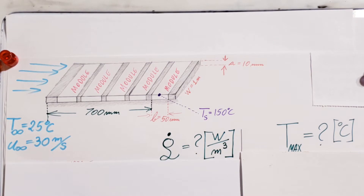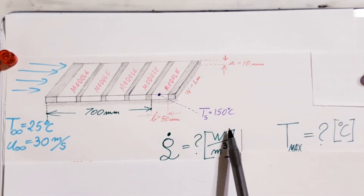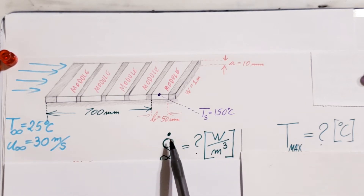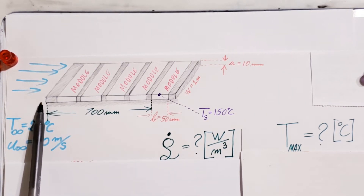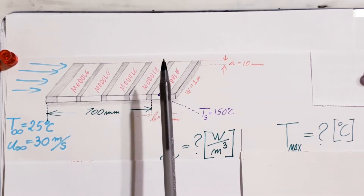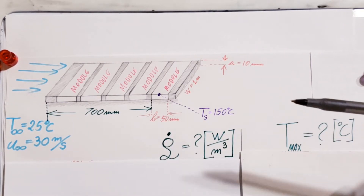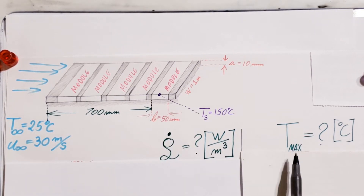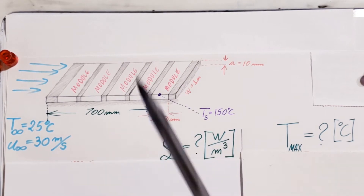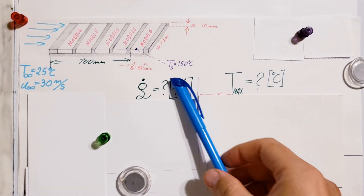The air has a velocity of 30 meters per second. They want us to find two things: first, the power generation per volume required in a module that is 700 millimeters from the leading edge of the plate — what power generation is needed to keep the surface temperature constant. They also want us to find the location and the maximum temperature inside this module.